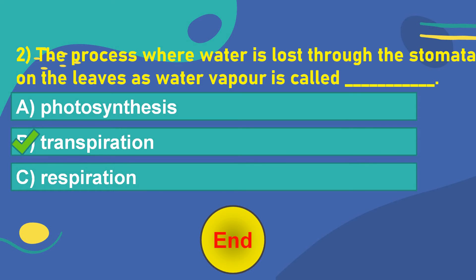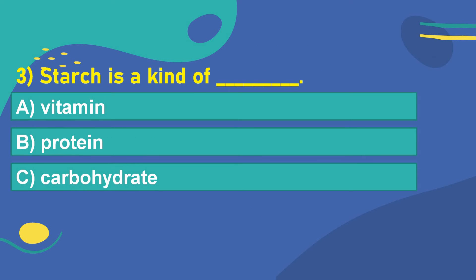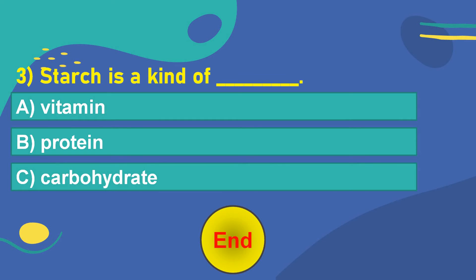Let's move on to the next question. The third question is: Starch is a kind of dash. Option A: Vitamin. Option B: Protein. Option C: Carbohydrate. Think of the answer. Your time starts now. 5, 4, 3, 2, 1, 0. OK. The correct answer is Option C: Carbohydrate.